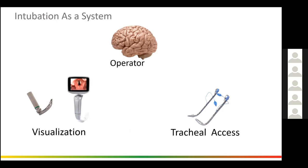All of these components need to be in balance or the system does not work well. If we have a video laryngoscope — the best way to visualize the trachea — but a medical student intubating as the operator, that's not going to work very well. If we have a very skilled operator with DL and no intubation stylet, we're probably still going to get the tube in. We compensate for equipment shortcomings via skills and training. The most expensive component in the room is the operator, and the most expensive way to improve that component is through training. What we want to do is have tools that lower the training needed.